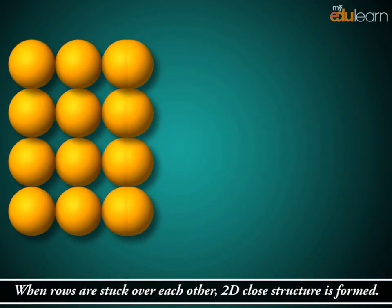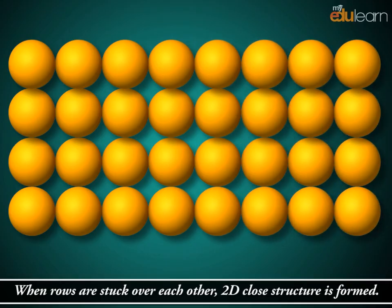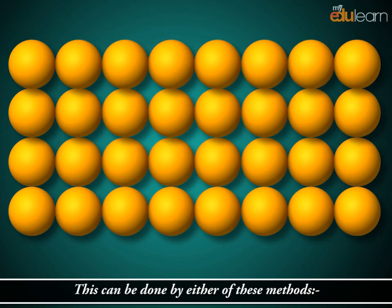When rows are stuck over each other, 2D closed structure is formed. This can be done by either of these two methods.